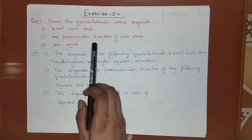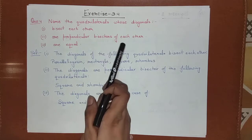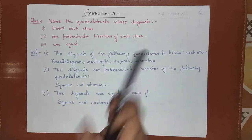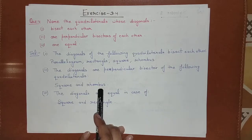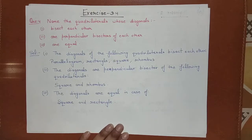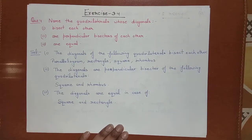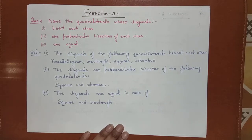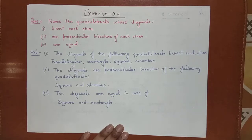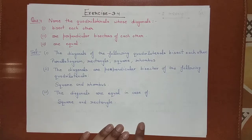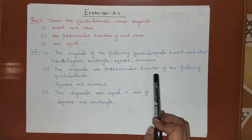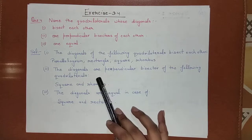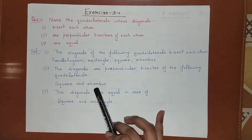Next, diagonals that are perpendicular bisectors of each other. We have studied 2 cases: square and rhombus. These are the 2 quadrilaterals whose diagonals perpendicularly bisect each other.